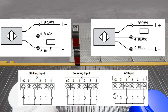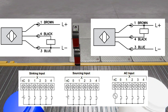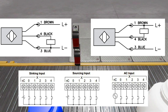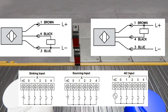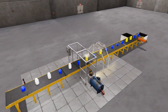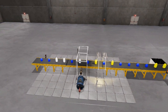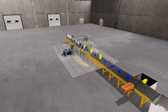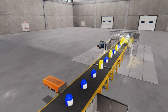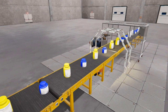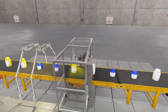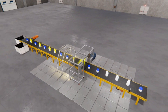When choosing between NPN and PNP wiring, consider the compatibility with your control device and the wiring requirements of your application. Some control devices may only accept one type of wiring, so it is important to check the specifications. It is also crucial to ensure proper polarity when wiring proximity switches — incorrect polarity can lead to malfunctioning or inaccurate detection. Always refer to the manufacturer's wiring diagram and guidelines to ensure correct wiring and reliable operation.